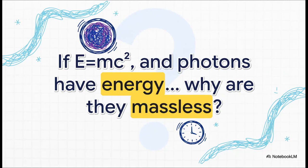And it all kicks off with this riddle right here. We know light has energy. You can feel the warmth from the sun, right? And Einstein's famous equation seems to say that energy and mass are two sides of the same coin. So how can photons, these little particles of light, have energy but zero mass? It just feels like it doesn't add up.